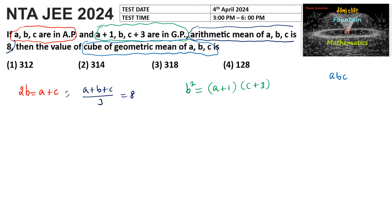The geometric mean of a, b, c is (abc) to the power of 1 by 3, and for the cube of the geometric mean we need to cube that. So we need to find the value of abc. This is the question — let's simplify.